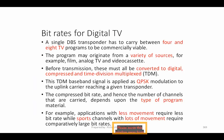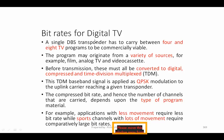A single DBS transponder has to carry between four and eight TV programs to be commercially viable. Which means if you want to go commercial and go live, you need to have at least four to eight TV programs. Only then can you commercialize your product — that should be the capacity of each transponder.